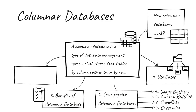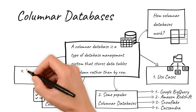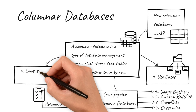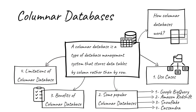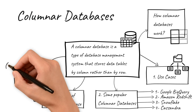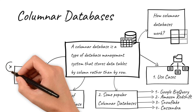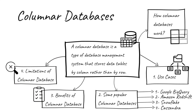Limitations of columnar databases: 1. Modifying and deleting data is slower and more complex. 2. Lack of row-level locking makes transactions difficult. 3. Added complexity for inserts, deletes, and locking mechanisms. 4. Joins on unsorted data can be slow.